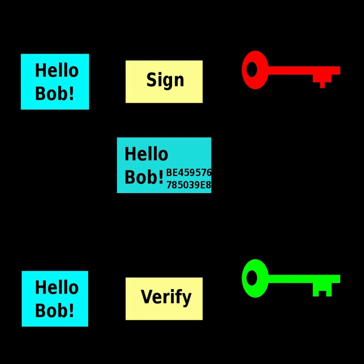In 1988, Shafi Goldwasser, Silvio Micali, and Ronald Rivest became the first to rigorously define the security requirements of digital signature schemes. They described a hierarchy of attack models for signature schemes, and also presented the GMR signature scheme, the first that could be proved to prevent even an existential forgery against a chosen message attack.